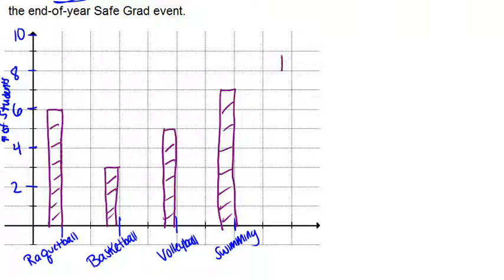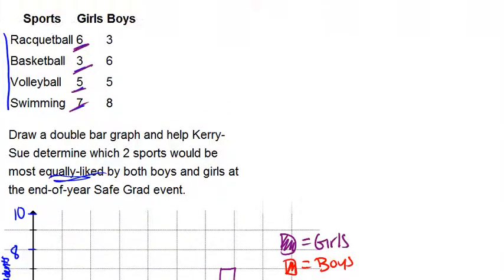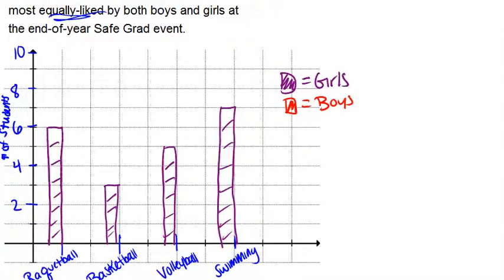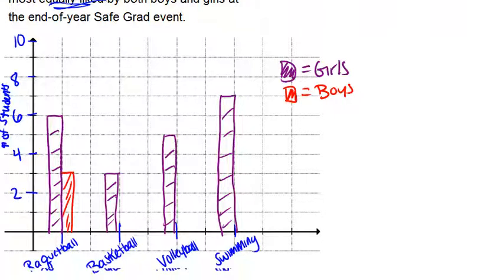Our purple bars represent girls. Now we're going to put in the information for the boys with the second set of bars, and we'll make red be the data for the boys. For the boys, we had 3 for racquetball, 6 for basketball, then 5 and 8. We'll put in that information right next to the bars for the girls, with space in between the different categories.